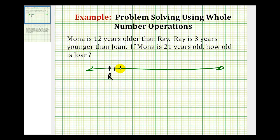So one, two, three, four, five, six, seven, eight, nine, ten, eleven, twelve. This point here would represent Mona's age.